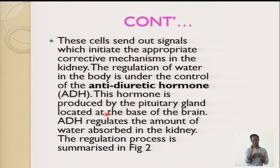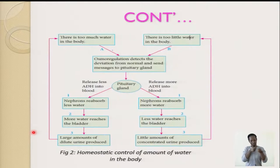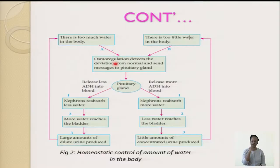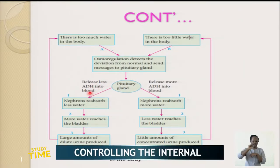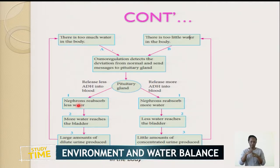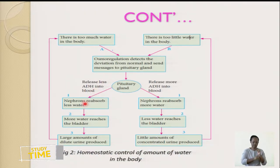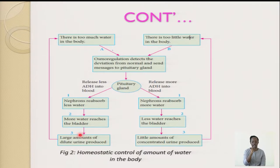ADH controls the amount of water absorbed in the kidney. When there is too much water in the body, the hypothalamus detects it and signals the pituitary gland, which releases less ADH into the blood. The nephron then reabsorbs less water, so more water reaches the urinary bladder and you produce a large amount of dilute urine. When there is too little water in the body, the pituitary gland releases more ADH, the nephron reabsorbs more water, and you produce a small amount of concentrated urine.